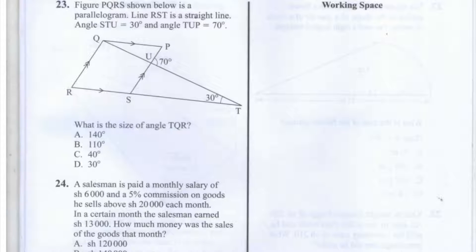This is question 23 of the 2013 KCPE Maths paper. Figure PQRS, shown below, is a parallelogram. Line RST is a straight line.